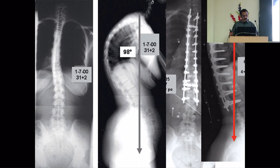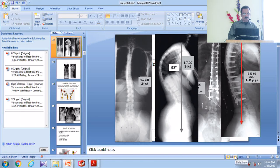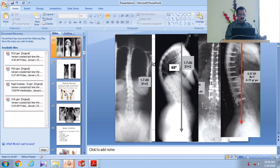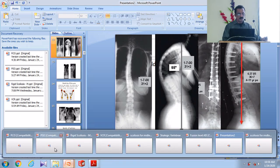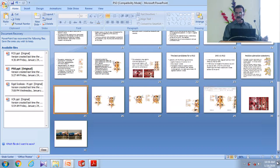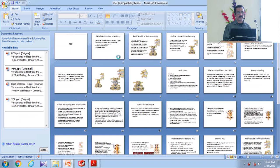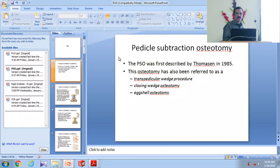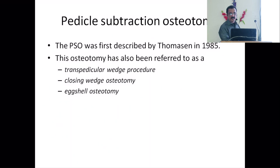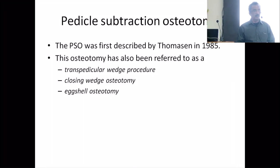We will discuss SPO during the dissection. Coming on to the PSO — it is called pedicle subtraction osteotomy. Any doubts about the PCO — we will complete that and then go there.